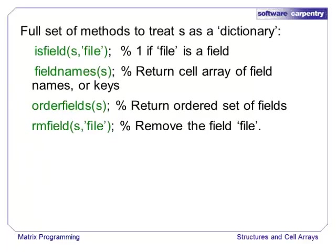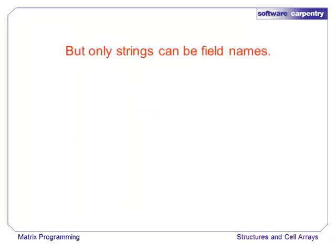Using the methods isfield, fieldnames, orderfields, and rmfield, and using the parenthetic access method, a structure can be used just like a dictionary in MATLAB. However, in a structure, the only legal type of field name is a string. Numbers are not allowed. If you need to use numbers as your storage parameters, MATLAB provides cell arrays, which is our next topic.